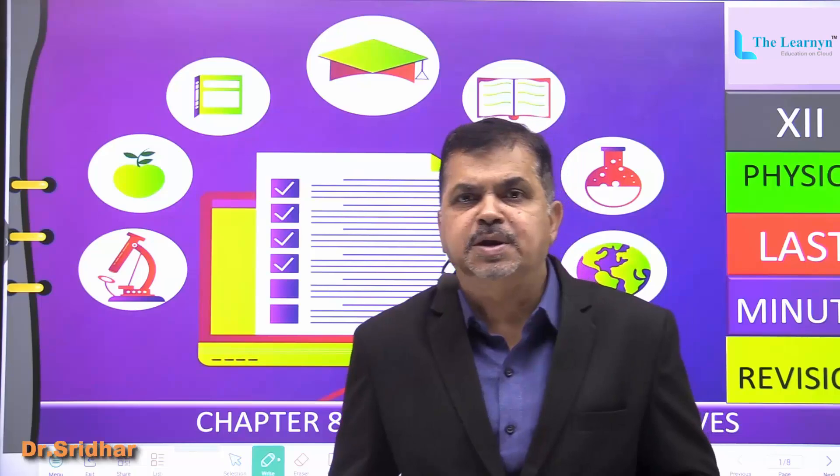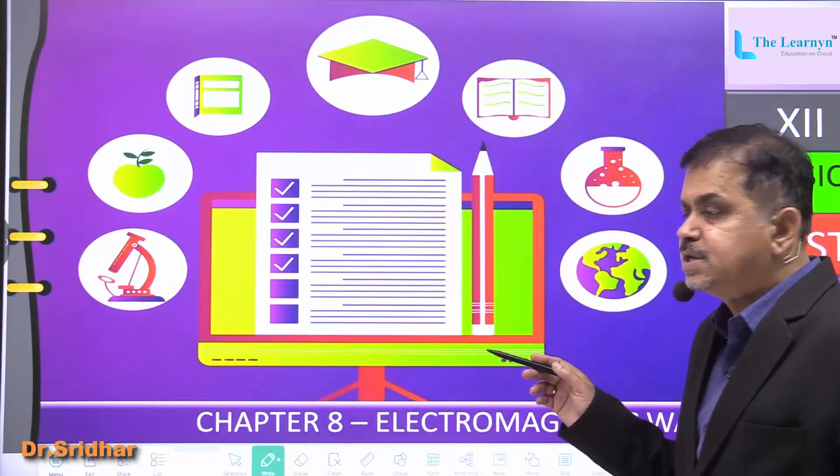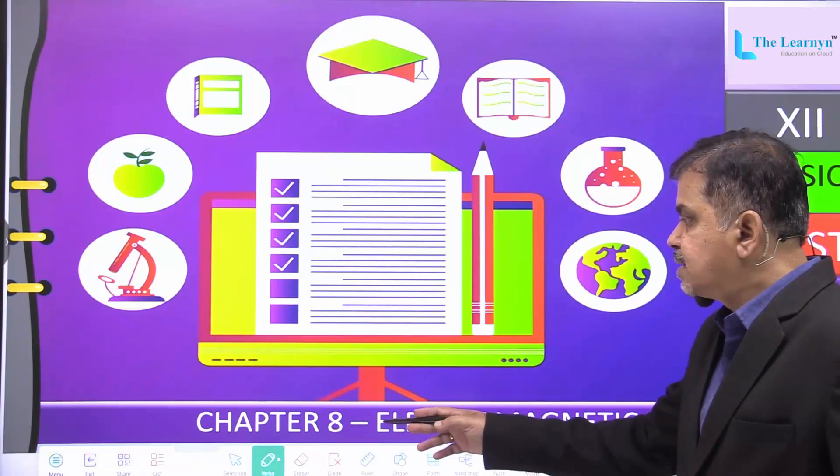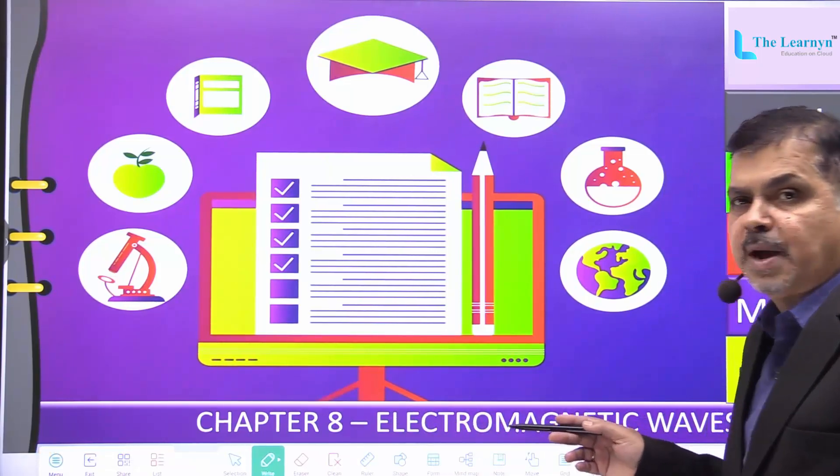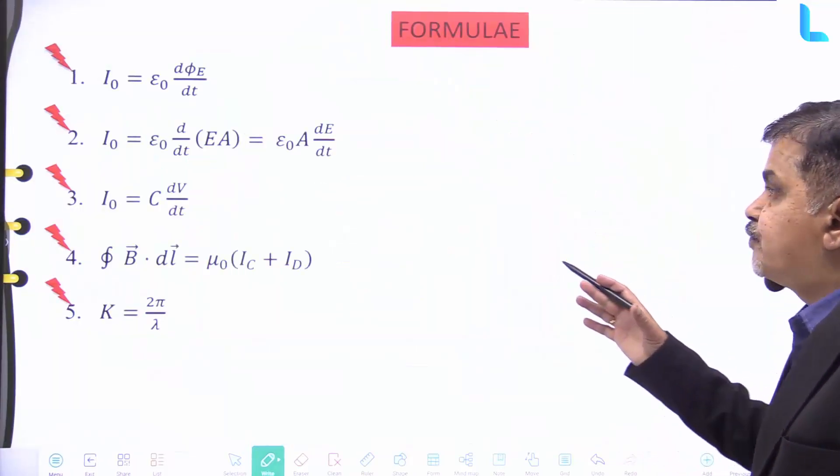Now let us do a last minute revision on the subject of physics for Class 12 CBSE. We will cover Chapter 8, electromagnetic waves. We have the important formulas at a glance.